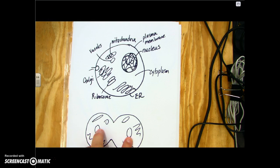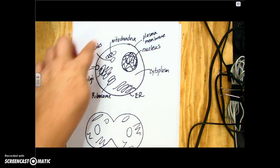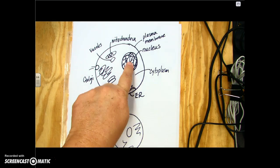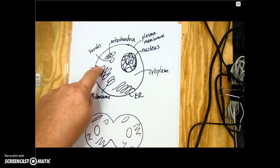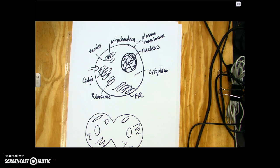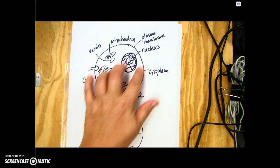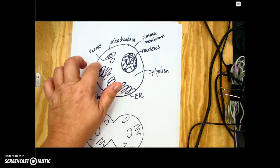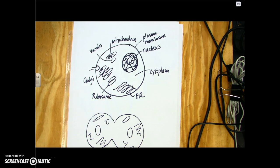You have to understand that the cell contains a nucleus, which is where all the DNA is. The outside of the cell is the plasma membrane, and all of the organelles inside the cell have different jobs to do. The places we're going to be concerned with for this unit are: the nucleus, where the DNA is; the cytoplasm, which is the area of the cell where the organelles are located; and the ribosome.